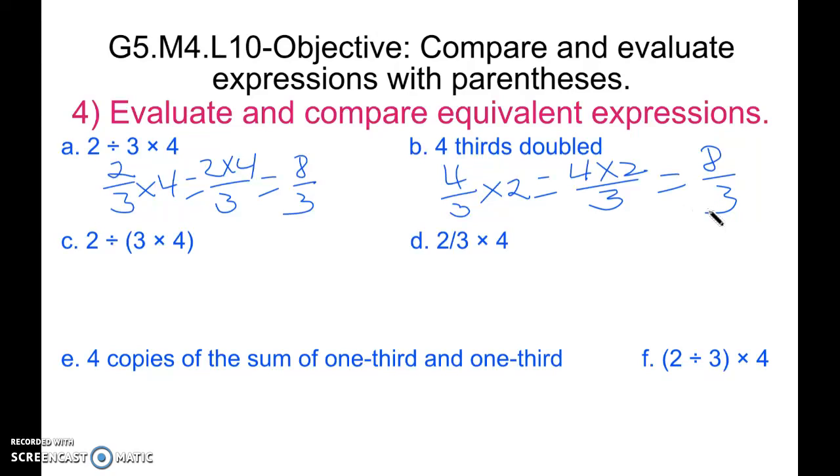In this problem, we have 2 divided by 3 times 4. While it looks similar to A, we recognize that we have to solve inside the parentheses first. So this problem, written as a fraction, is going to be 2 over 3 times 4, which is going to be 2 over 12, which is going to be 1/6. So far, C is the one that's different.